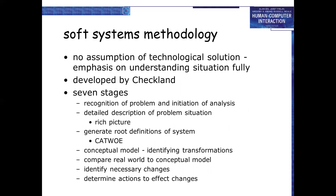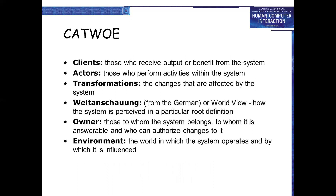SSM continues: generate a root definition of the system using CATWOE. Then build a conceptual model identifying the transformation. Compare the real world to the conceptual world, identify necessary changes, and determine actions to affect those changes. CATWOE stands for: Clients — those who receive output or benefit from the system; Actors — those who perform activities within the system; Transformation — the change affected by the system.